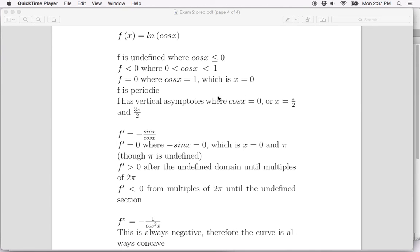So we have asymptotes where cos x equals 0, or that's where x equals π/2 or 3π/2. That gives us a good feel for what things are looking like right off the bat.